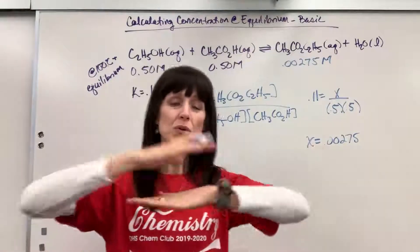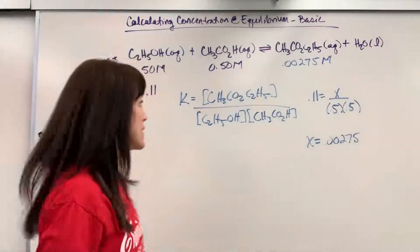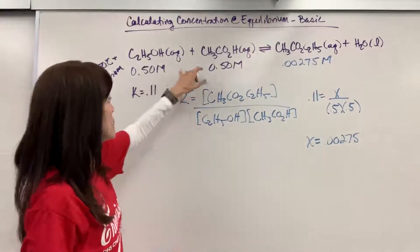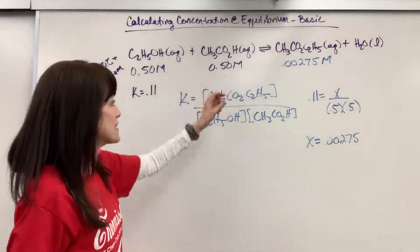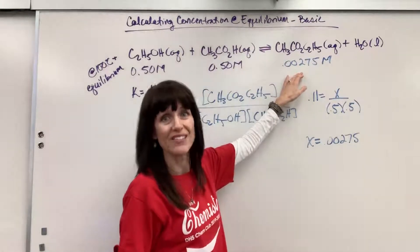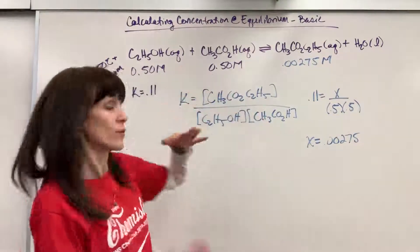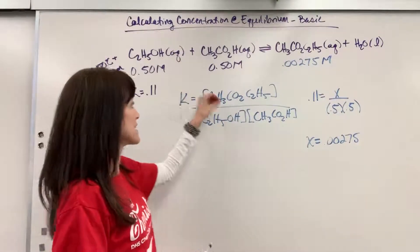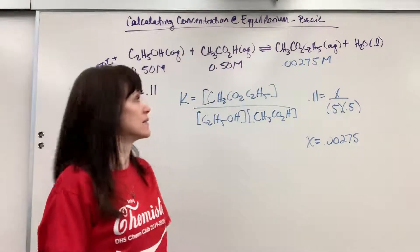When we're at equilibrium, the forward rate equals the reverse rate. We have 0.5 molar of each reactant, ethanol and acetic acid, and 0.00275 molar of the ethyl acetate. At equilibrium, we have more reactants than product. It is a reactant-favored reaction.